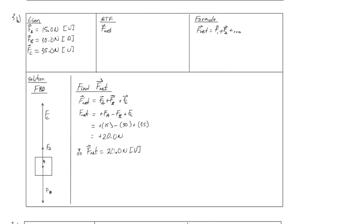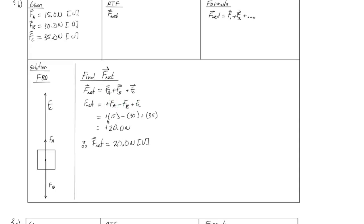So you would expect this object to accelerate upward. So Fnet is equal to FA plus FB plus FC. Dropping the vector notation, Fnet is equal to plus FA minus FB plus FC. The positive means up, the negative meaning down. Substituting in, we have plus 50 minus 30 plus 35, which gives us a magnitude of positive 20 newtons. Or Fnet is equal to 20 newtons up.